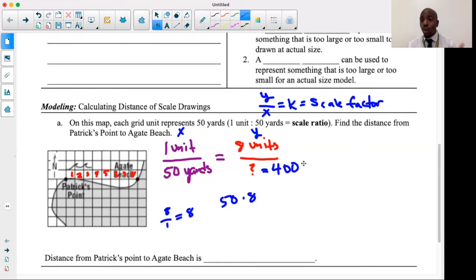Because obviously these are word problems, they have units next to them, they have words that follow. You do need to indicate what this 400 represents. So in this case, if I go down here, it says the distance from Patrick's Point to Aggie Beach is 400 yards.